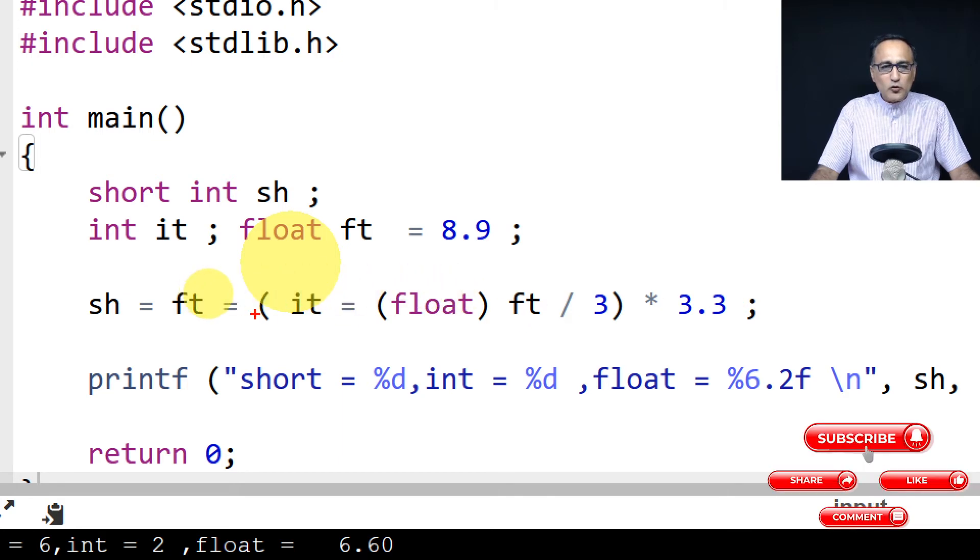Now 3.3 into two is 6.6. So ft is going to be two into 3.3, which is going to be 6.6.